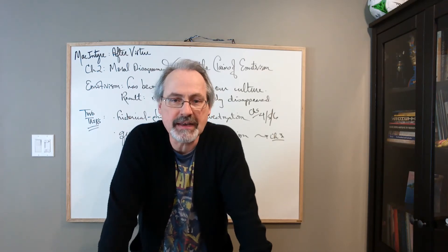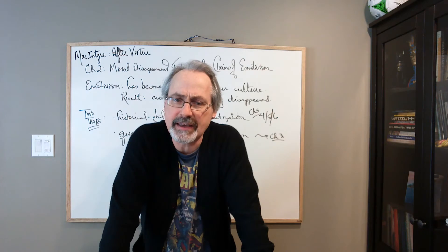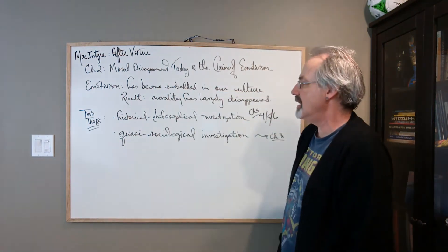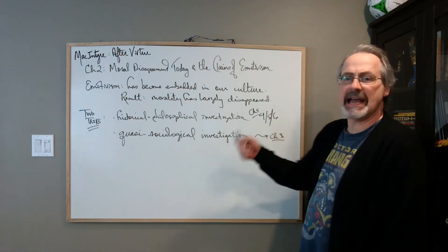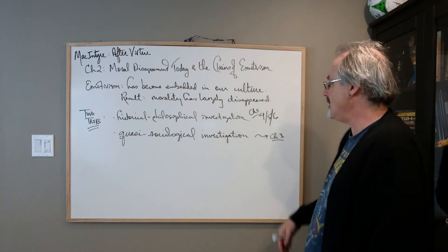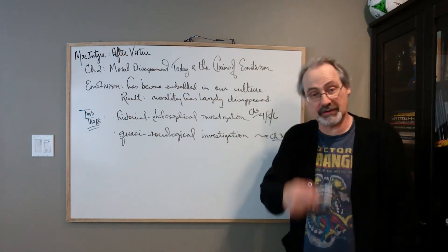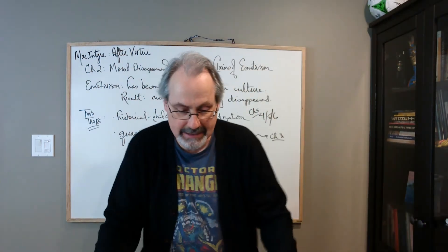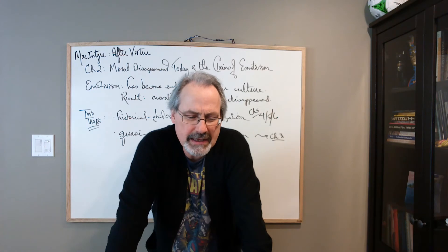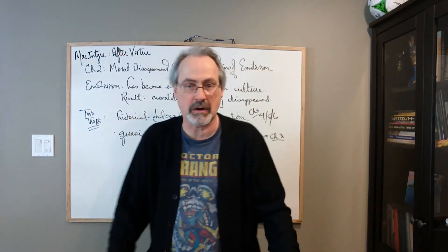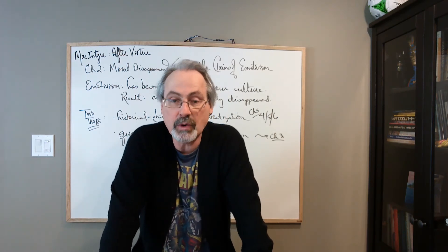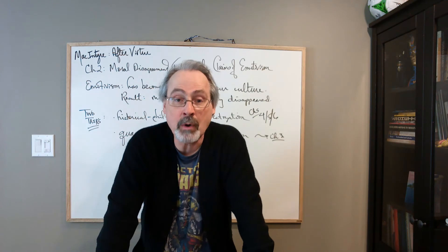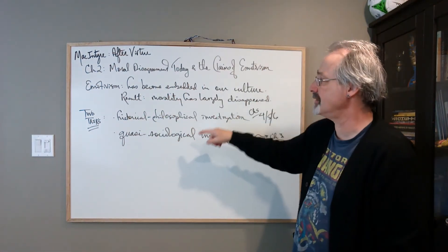This disappearance of morality commits MacIntyre to two distinct but related tasks. One is a historical-philosophical investigation that will look at the Enlightenment and its problems — that occupies chapters four, five, and six. In that investigation he wants to identify and describe this lost morality and evaluate its claims to objectivity and authority.